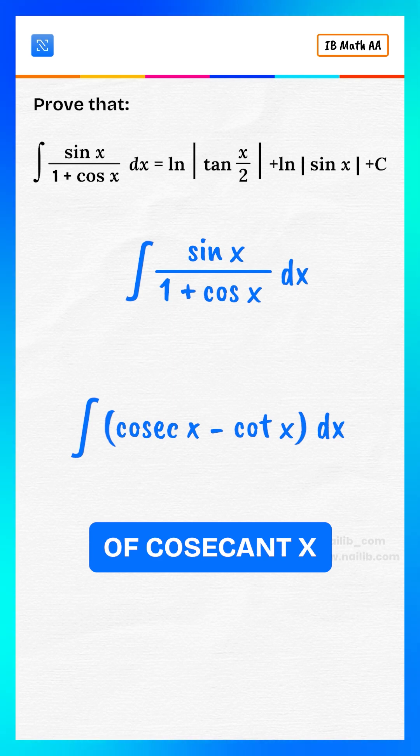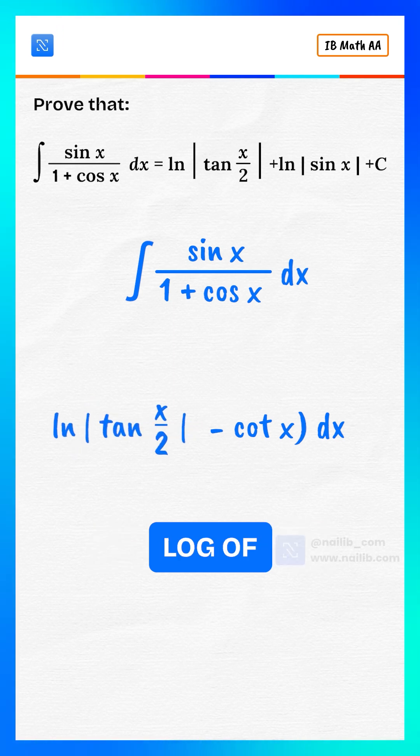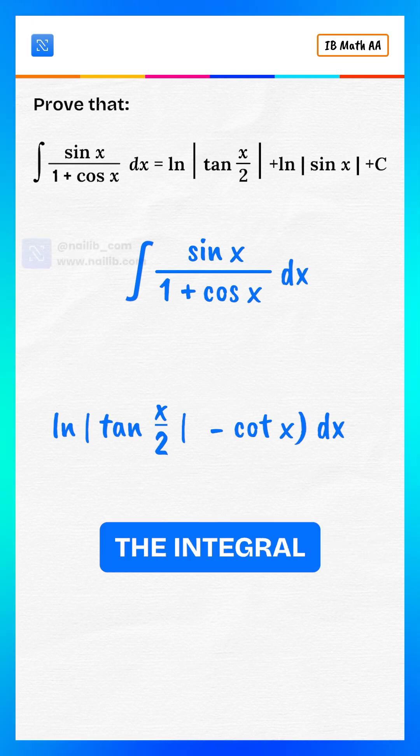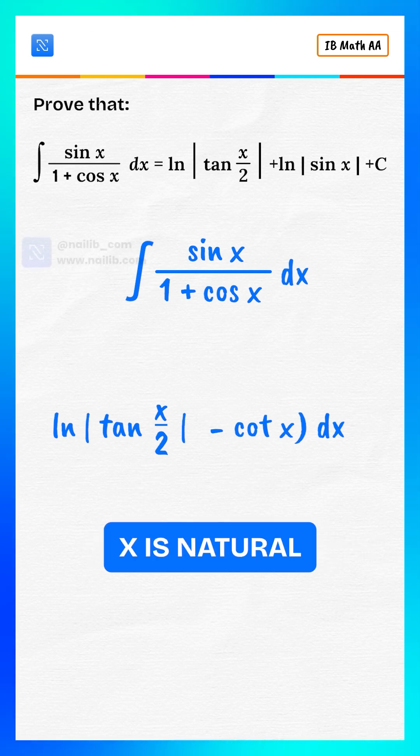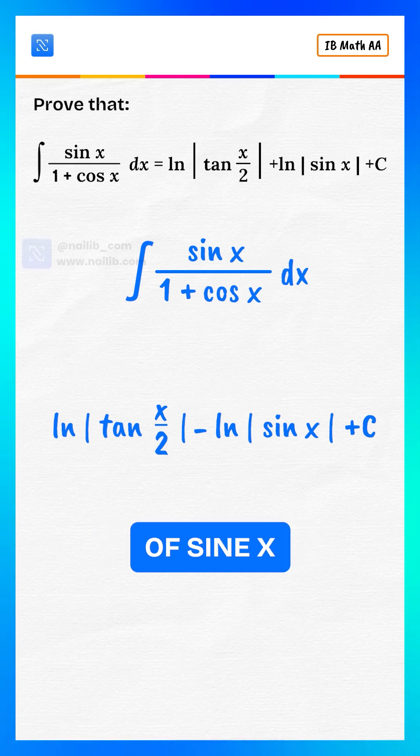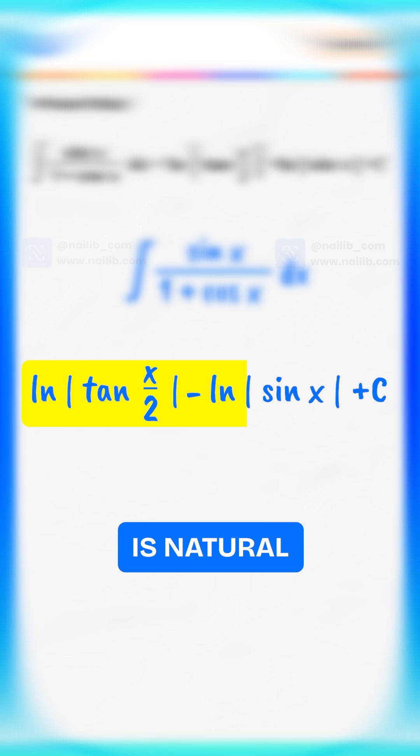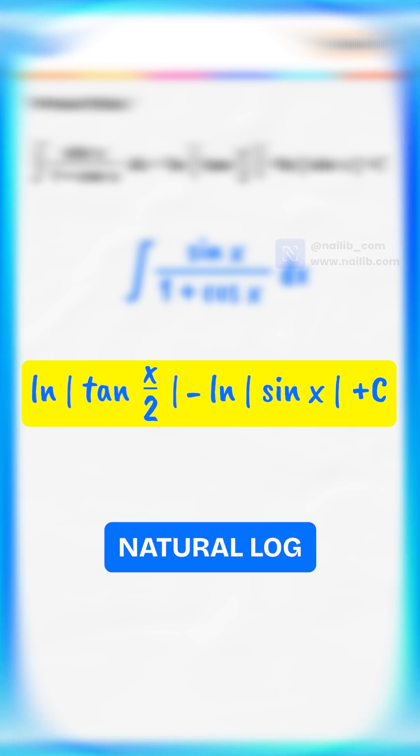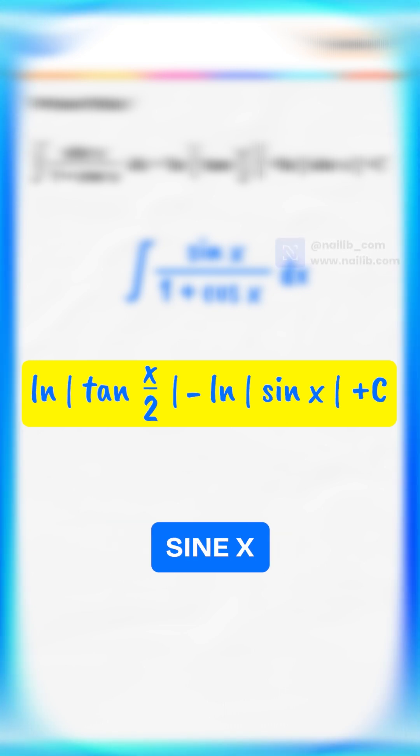The integral of cosecant x is natural log of the absolute value of tangent x by 2. The integral of cotangent x is natural log of the absolute value of sine x. So the final result is natural log of the absolute value of tangent x by 2 minus natural log of the absolute value of sine x plus constant of integration.